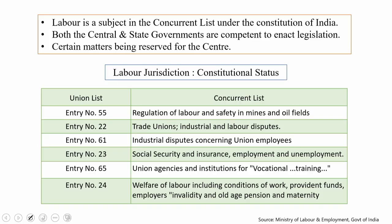Labor specifically is a subject in the concurrent list. The concurrent list has both the state and the center as the main actors, meaning both authorities have jurisdiction over those particular subjects. Labor is such a subject which is part of the concurrent list under the Constitution of India, and both the central and state governments are competent to enact legislation on this matter.